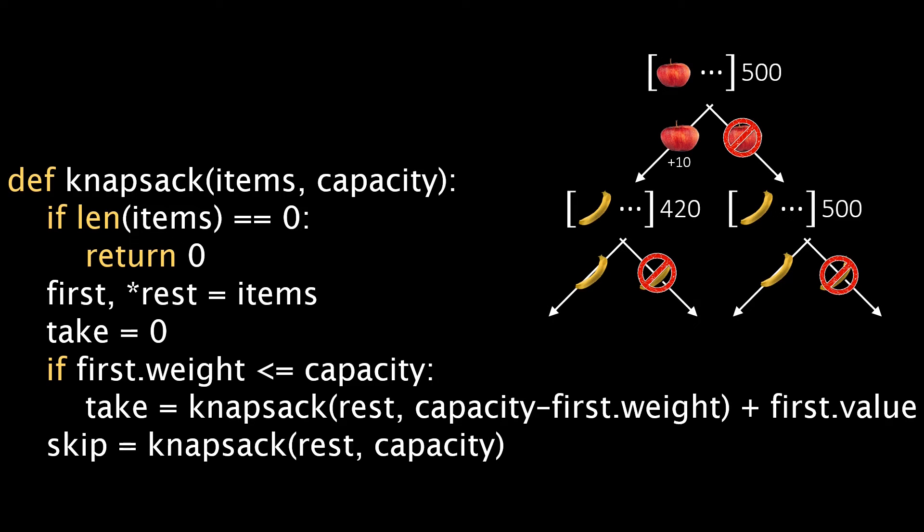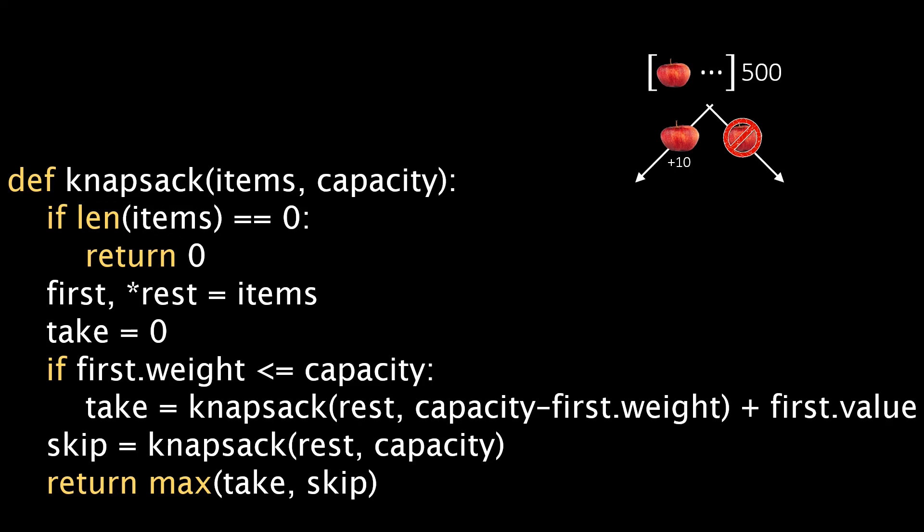This is part of the recursion. Eventually both calls would return. In case we took the apple, a total value of 34 was achieved. If we didn't take the apple, a value of 42 was achieved. It looks like not taking the apple is more valuable. However, in the take variable we also add the value of the apple, which is 10. In this case, take becomes 44. We return the maximum of both branches. In this case 44, so the best possible subset of fruits has a total value of 44.